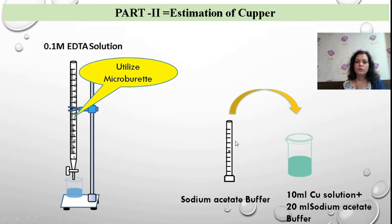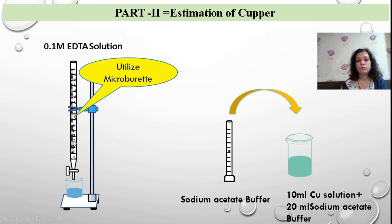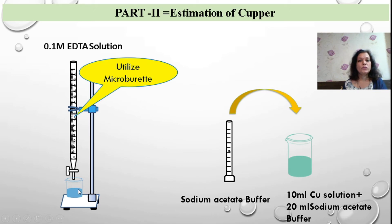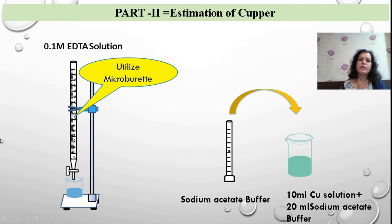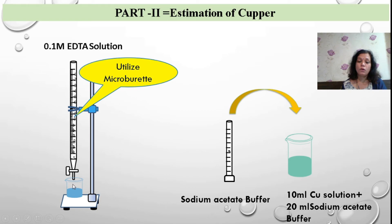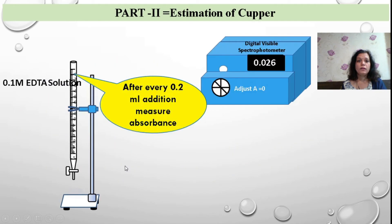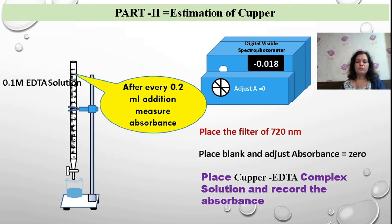The solution has been provided to you. Add buffer solution and keep the beaker ready under the burette, which is a micro burette, as you are going to add 0.2 ml of solution at a time — so use a micro burette for this titration. For the prepared solution, measure the absorbance at lambda max, that is 720 nanometers. After every addition of 0.2 ml of 0.1 molar EDTA solution, mix it, pick up in a cuvette, and measure the absorbance at 720 nanometers. Once you measure the absorbance, return all the solution back into the beaker. Repeat every time, measuring the absorbance at 720 nanometers.